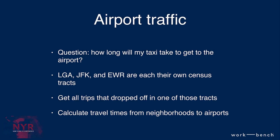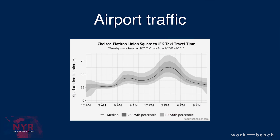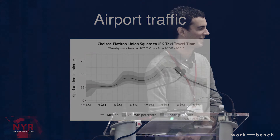Another fun one is: how long is your taxi going to take to get to the airport? We have all trips that dropped off at one of the airports and know where they started. So for each neighborhood at each time of day to each airport, you can calculate the distribution of how long a taxi trip takes. For example, we're in the Chelsea-Flatiron-Union Square neighborhood right now; if you're going to JFK on a weekday a little after 9 a.m., the median travel time looks to be about 42 minutes, and the 90th percentile is a little less than an hour — maybe 55 minutes.